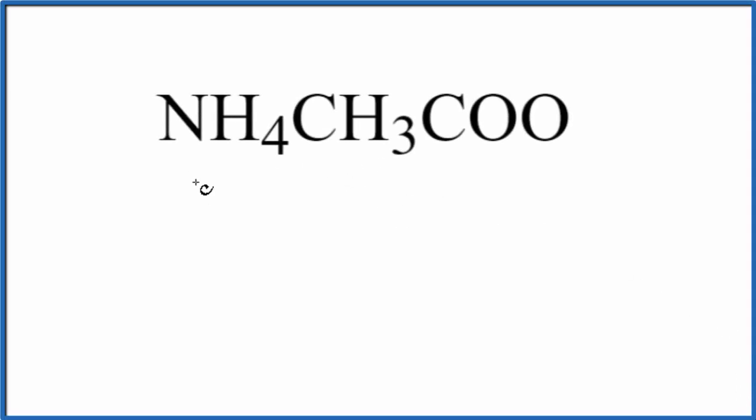In this video we're going to write the Lewis structure for ammonium acetate. So the first thing that we need to do to write this Lewis structure is realize that we have two polyatomic ions here.